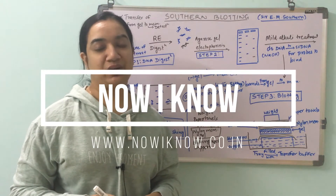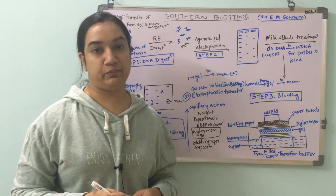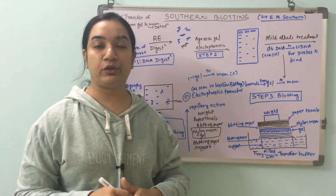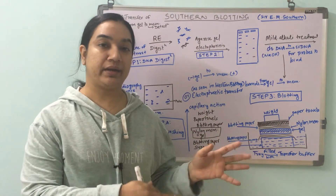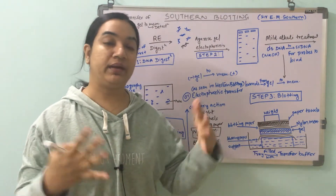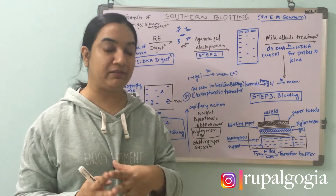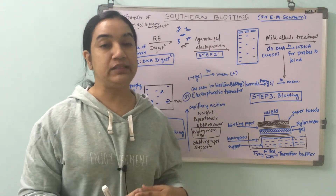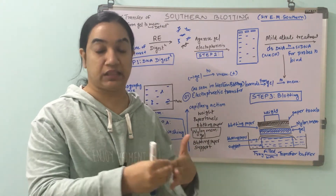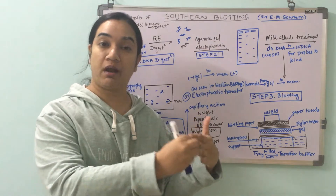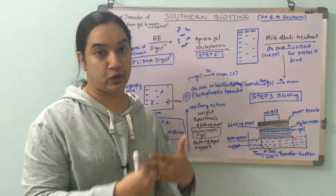Hello everyone and welcome back to Now I Know. I am Rupal and today we are talking about southern blotting. In the last video we talked about western blotting, which was to detect protein molecules. When it comes to blotting methods, when we are working with macromolecules like DNA we perform southern blotting, with RNA we perform northern blotting, and with protein we follow western blotting.